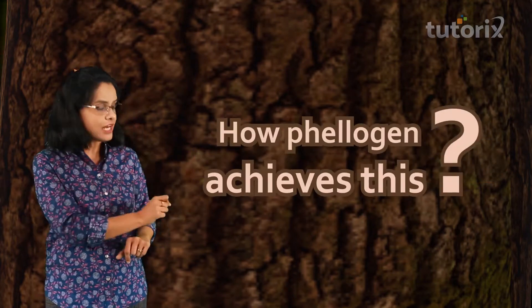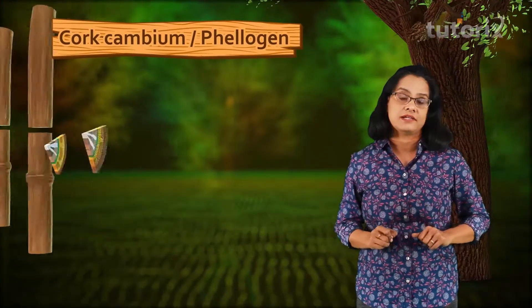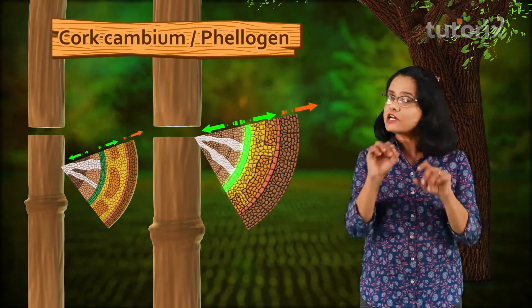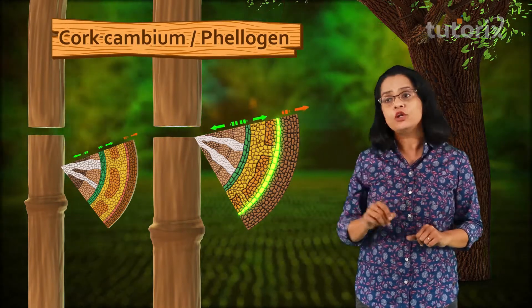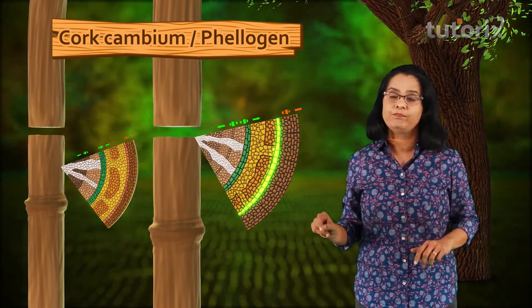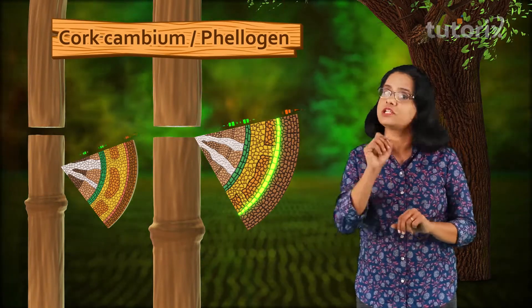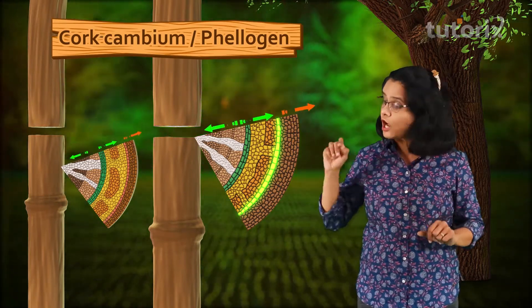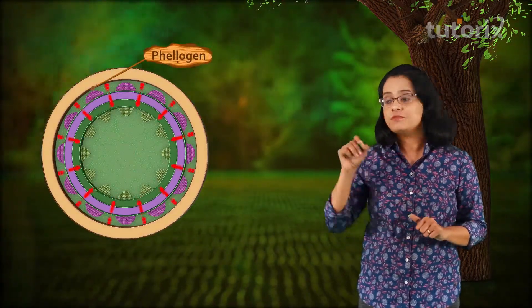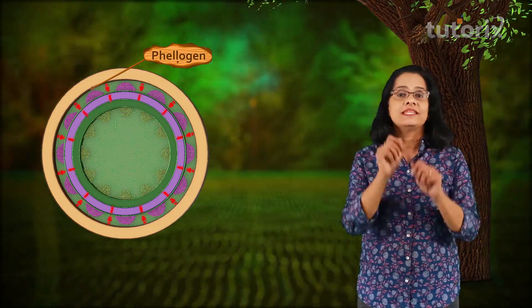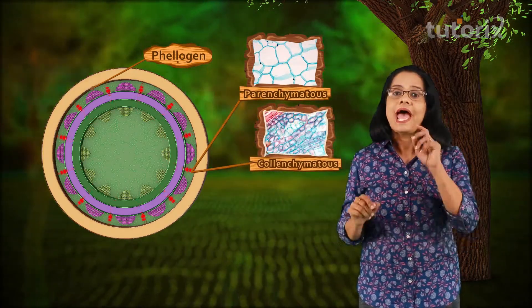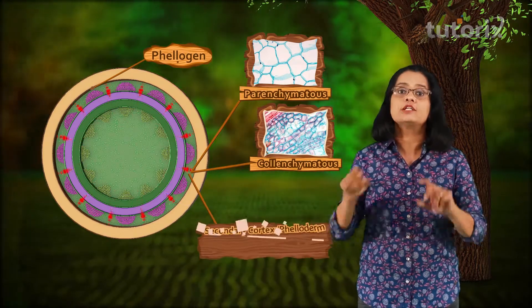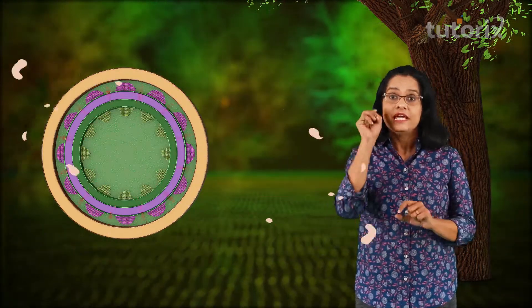The phelogen cells, just like the vascular cambium cells, divide on the outer side as well as the inner side, forming secondary tissues on both sides. When phelogen divides and forms tissues on the inner side, those secondary tissues are usually parenchymatous or collenchymatous, and they are called secondary cortex or pheloderm.